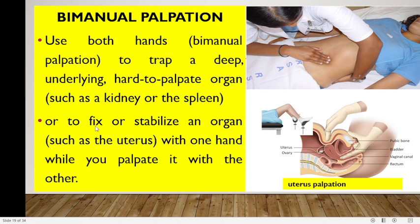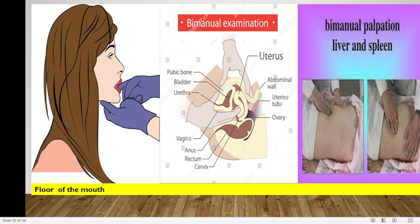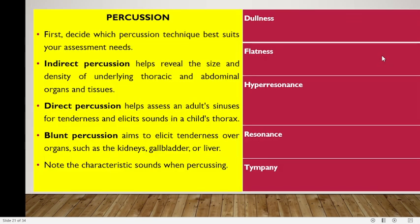Bimanual palpation is also used to fix or stabilize an organ such as the uterus — one hand stabilizes while the other palpates. Other instances for bimanual palpation include assessing the floor of the mouth, the uterus, and organs like the spleen and liver.